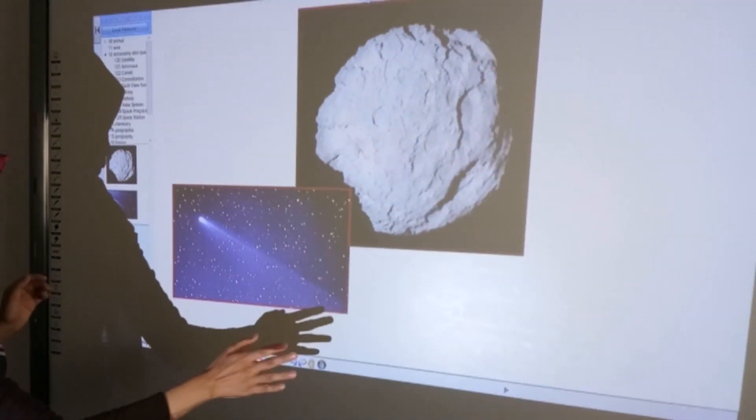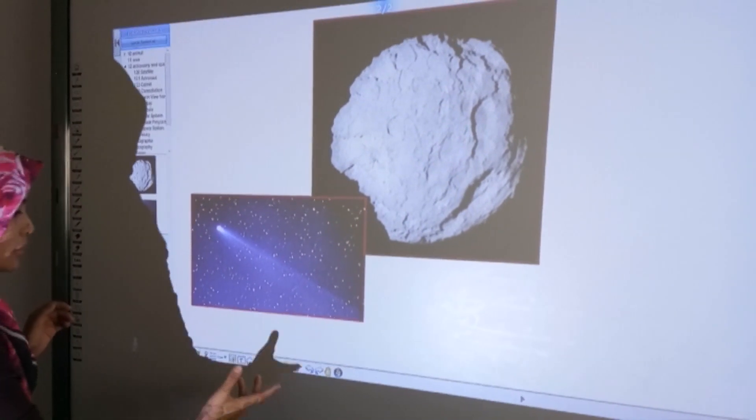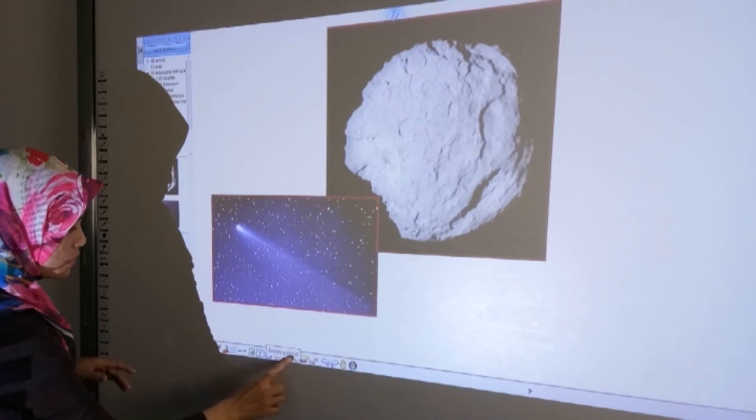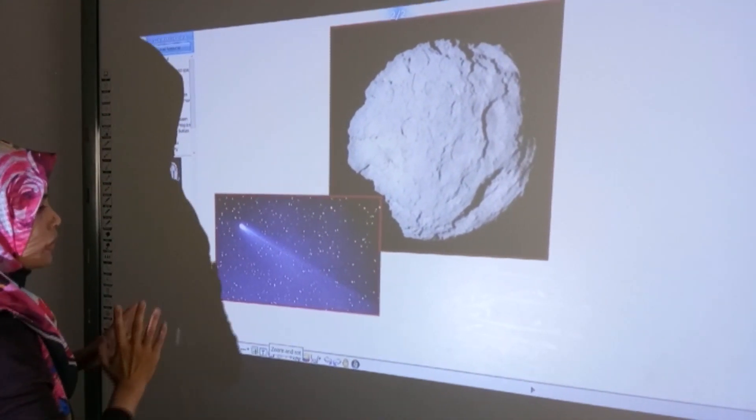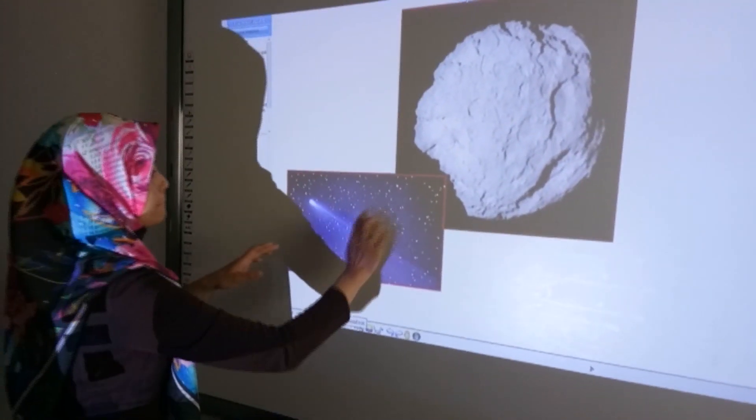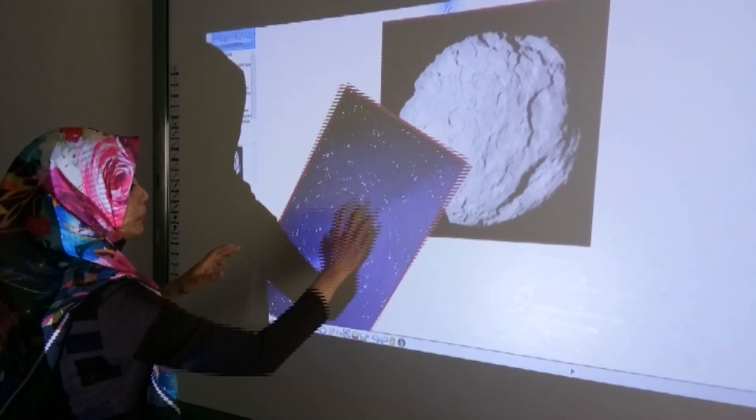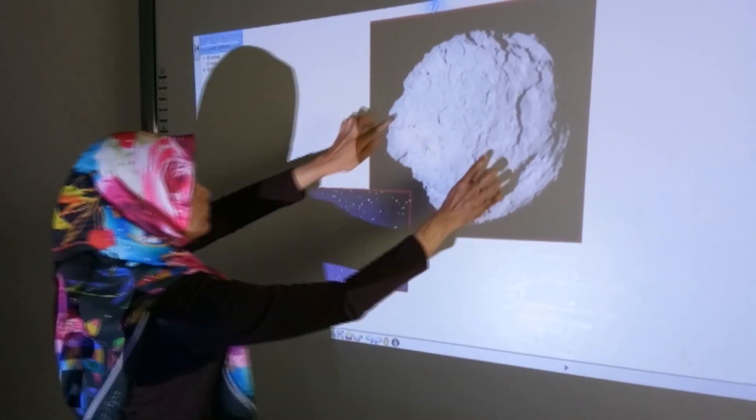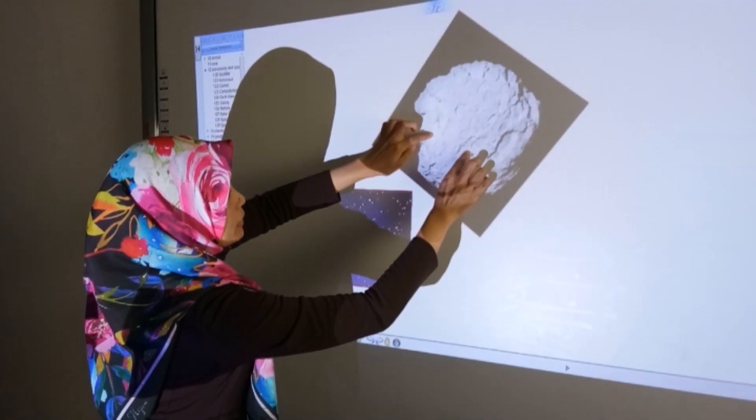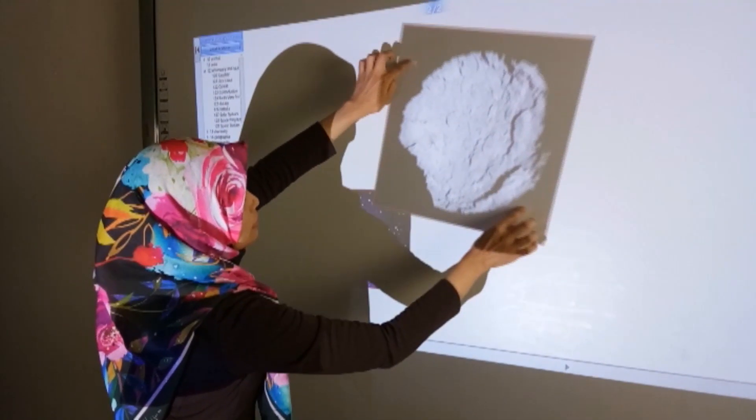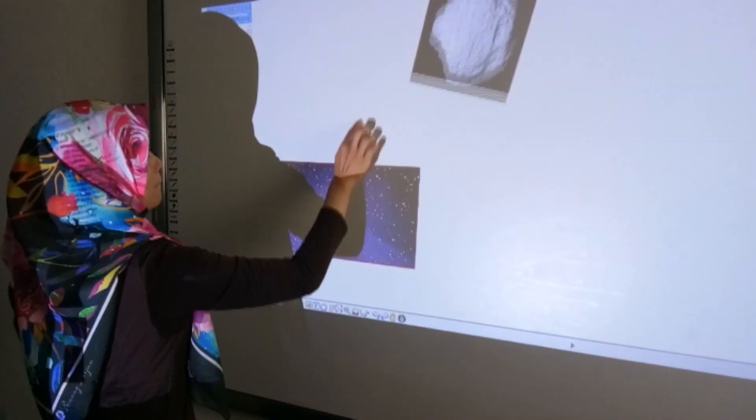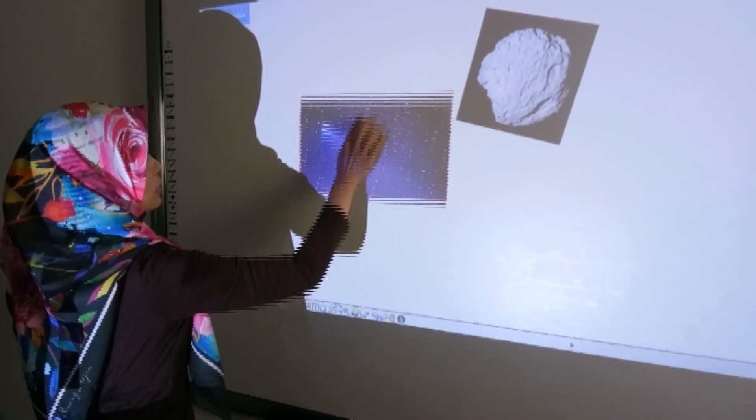Selain daripada tu, saya nak tunjukkan cara untuk kita zoom gambar. Selection dia dekat zoom and roll. Dah select ni. Nampak? Kita boleh besarkan. Zoom. Gunakan dua jari kita. Macam tu, besarkan, kecikkan.